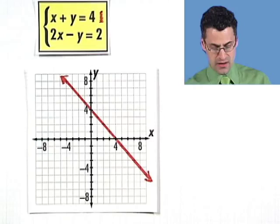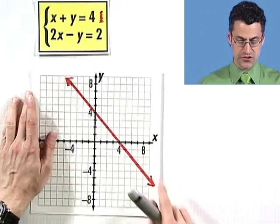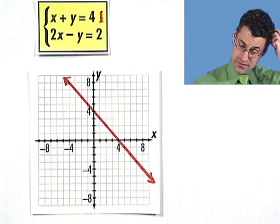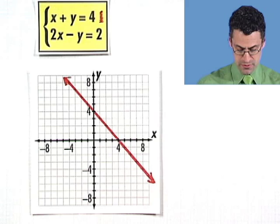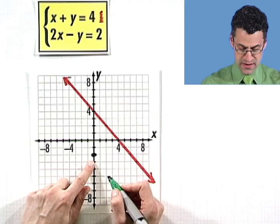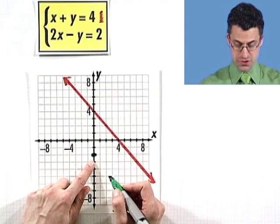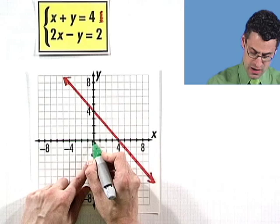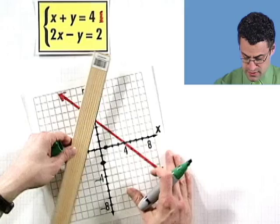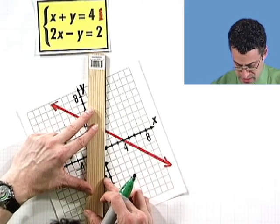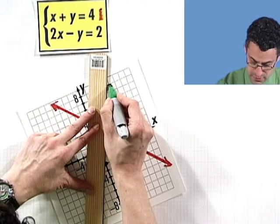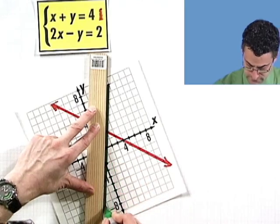If you want to graph the second equation, I could write it as y equals 2x minus 2, bringing the negative y to this side and the 2 over to the other side as a negative. The y-intercept there would be negative 2 and the slope would equal 2, which means I go 2 up and 1 over. Keep doing that and you get the beautiful green line.